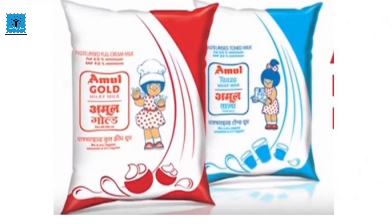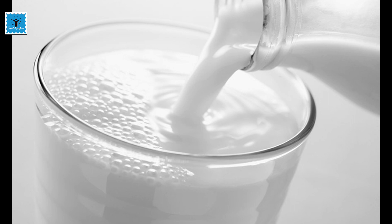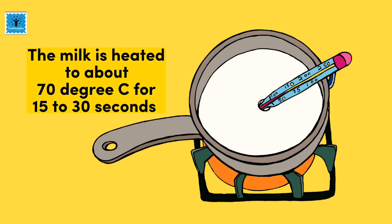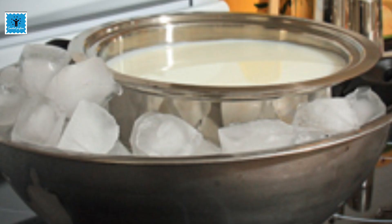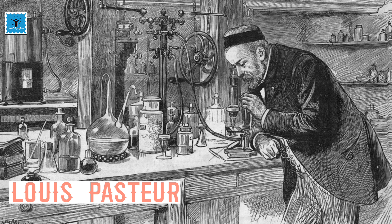Nowadays milk is delivered in packets, and this milk doesn't spoil quickly because it is pasteurized. Pasteurized milk can be consumed without boiling as it is free from harmful microbes. In this method, the milk is heated to about 70 degrees Celsius for 15 to 30 seconds, and then suddenly chilled and stored. By doing so, it prevents the growth of microbes. This method was first discovered by Louis Pasteur, which is why it is known as pasteurization.